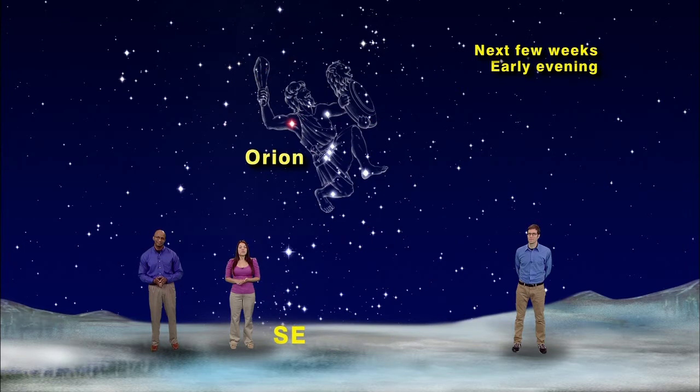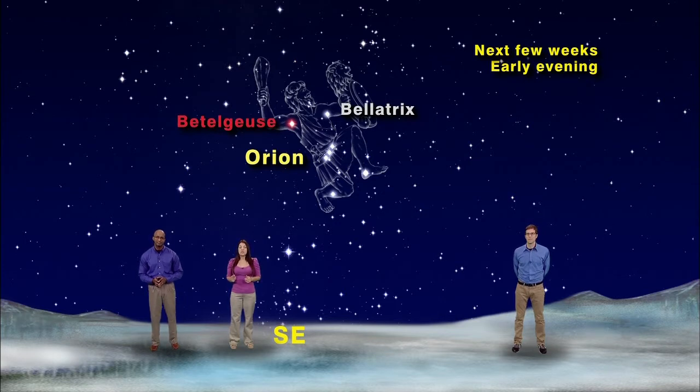Above these three belt stars, you will see two brilliant stars marking Orion's shoulders, Betelgeuse and Bellatrix. And below his belt, two brilliant stars mark his ankle and his knee, Rigel and Saiph.